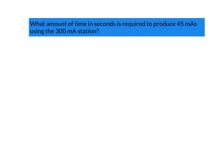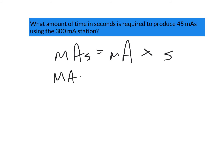This problem is asking: what amount of time in seconds is required to produce 45 mAs using a 300 mA station? We just need to remember that mAs equals mA times time in seconds. So we can also say that if we take mAs and divide it by mA, we will have the time in seconds — just basic algebra.